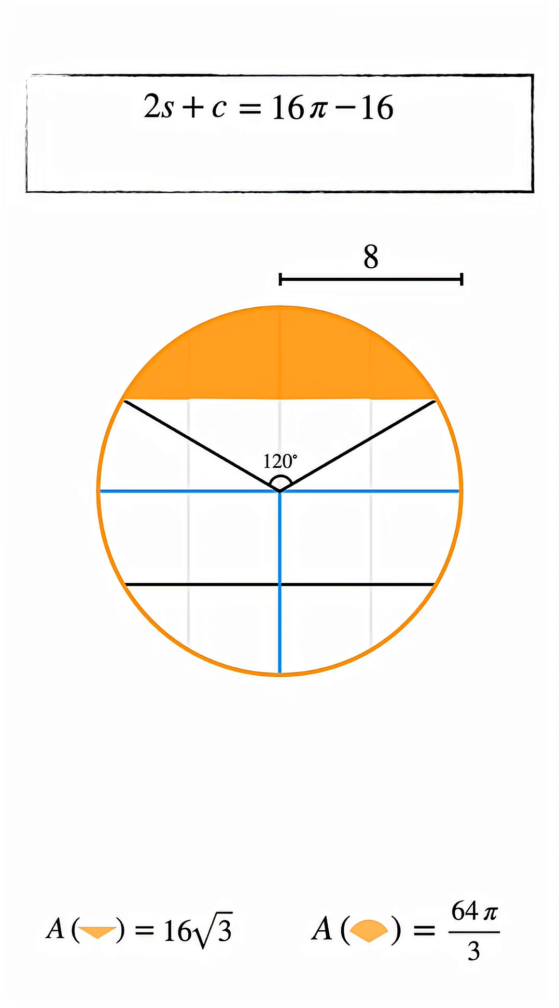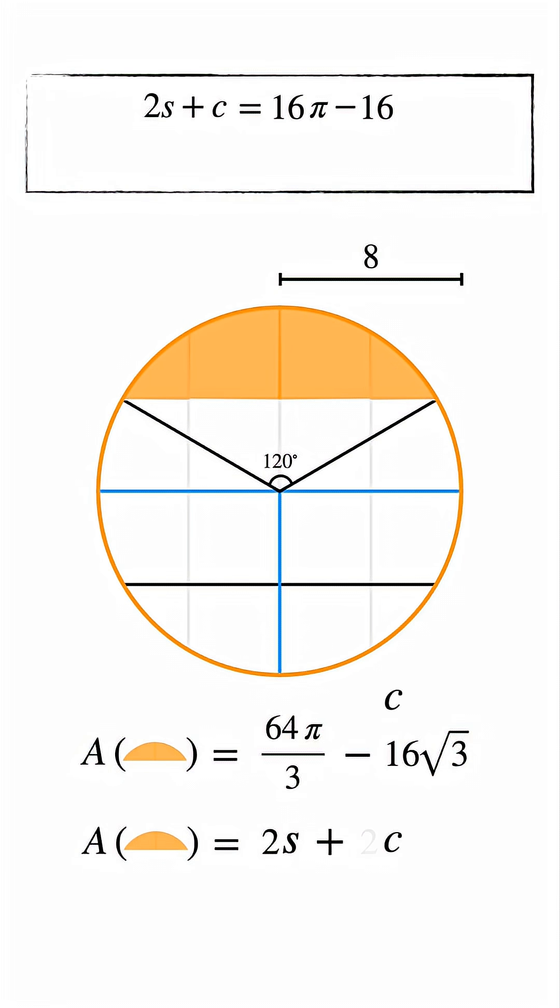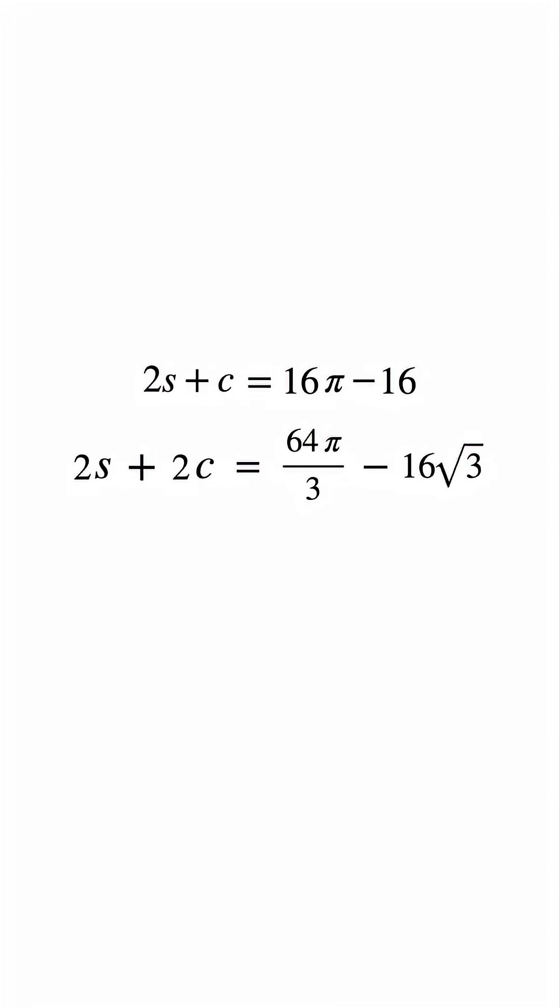But we're interested in this curved region, not the full sector. This area can be found by subtracting the triangle's area from the sector's area. That leaves us with 64 pi over 3 minus 16 square root 3. Now here's the key insight. This same curved region is made up of two side pieces and two corner pieces. So its area can also be written as 2s plus 2c. Setting these equal gives us our second equation.